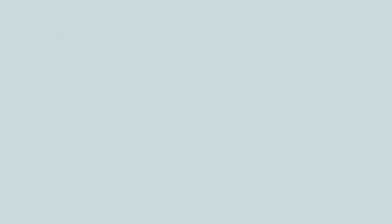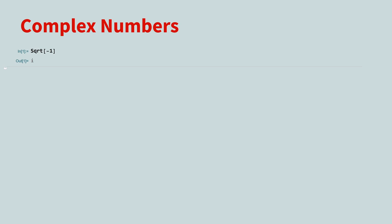Mathematica has had built-in support for complex numbers from day one. If you take the square root of negative one, you get i. Notice how the i is displayed. The double stroke lets you know you are working with the square root of negative one, and not the letter i.